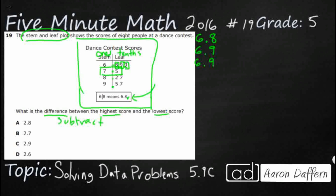Now if we go to the next row, we get 7.5 — that's pretty simple. Then we need 8.2, and then 8.7 is separate — it's not 8.27. The 2 and the 7 are both tenths-place values that are separate numbers. And then we finish this out with 9.5 and then 9.7.